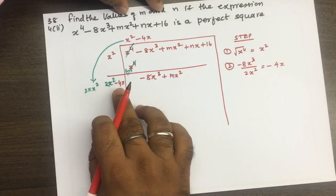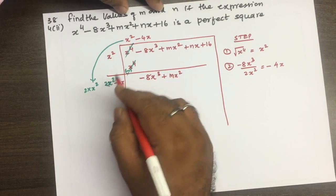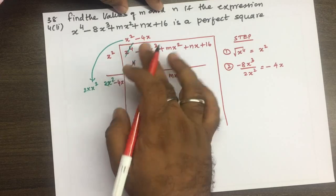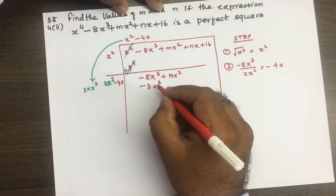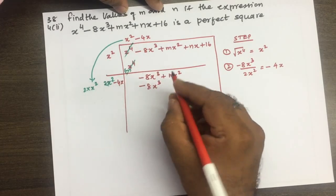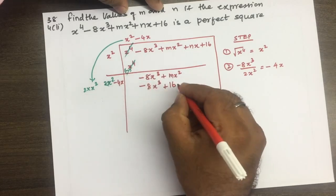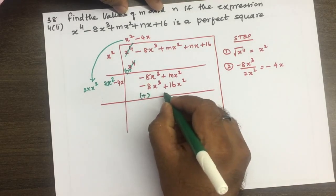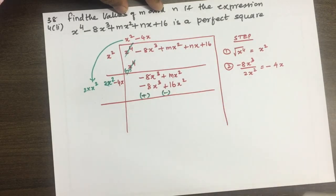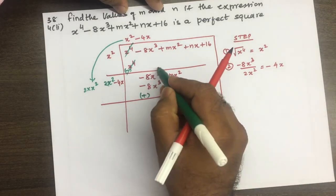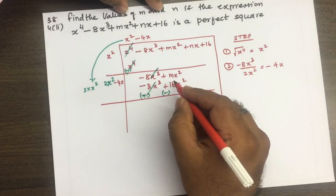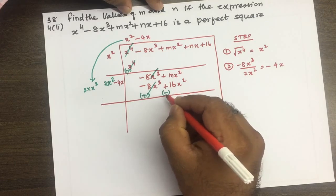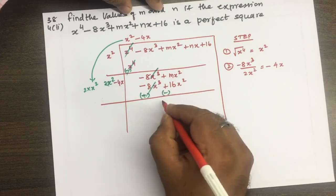Minus 4x से 2x square minus 4x को multiply करके: minus into plus = minus, minus into minus = plus। 8x cube होगा, x cube वाले term के नीचे x cube का term लिखना है। Plus 16x square होगा। फिर से हम sign change करेंगे, जो like terms हैं उनको cancel करके next term को add करके लिखना होगा।